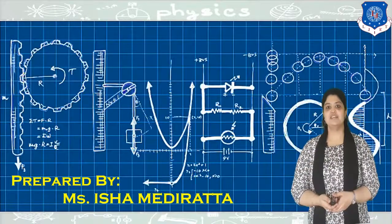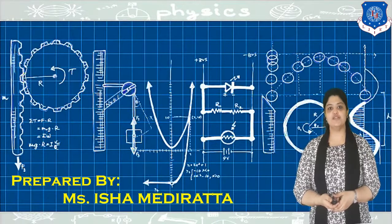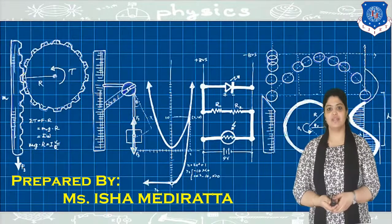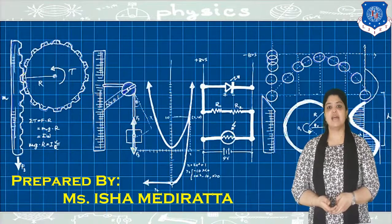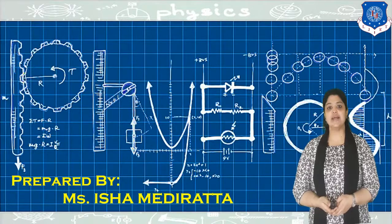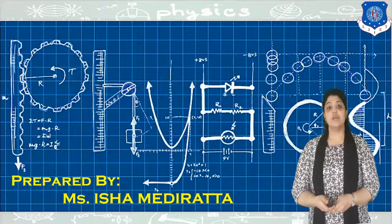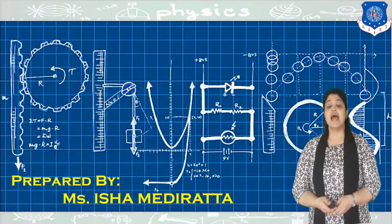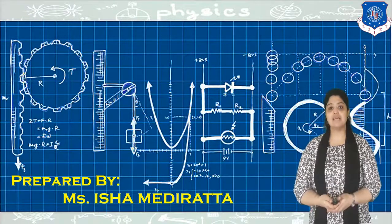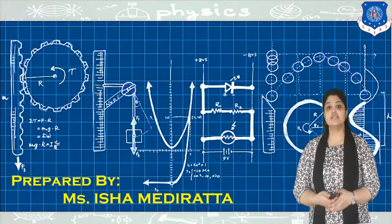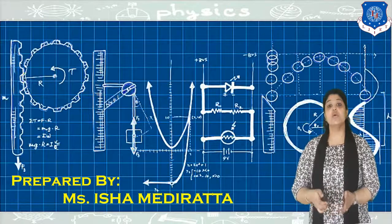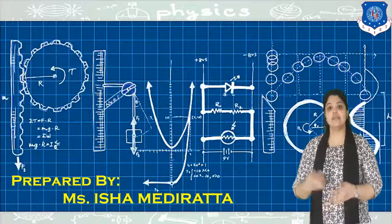Hello students, I am Professor Isha Medirata from LG Institute of Engineering and Technology. We have started with the third chapter of our syllabus, that is semiconductors. Till now we have covered properties and types of semiconductors. We have seen the equilibrium carrier statistics and the Fermi level variation with temperature and carrier concentration. In the previous video, we discussed about carrier generation and carrier recombination, carrier transport, and the different processes by which carriers flow in a semiconductor.